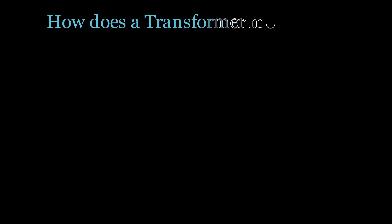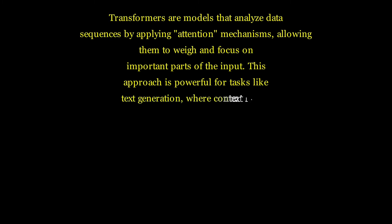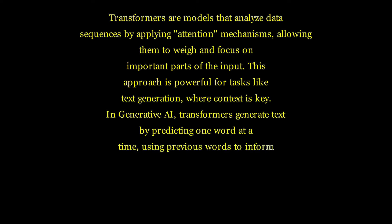How does a transformer model work in generative AI? Transformers are models that analyze data sequences by applying attention mechanisms, allowing them to weigh and focus on important parts of the input. This approach is powerful for tasks like text generation, where context is key. In generative AI, transformers generate text by predicting one word at a time, using previous words to inform the next, which enables the creation of coherent sentences and long-form responses.